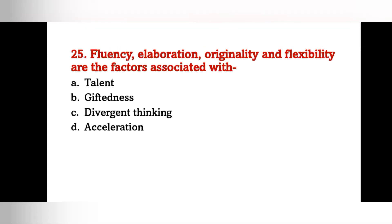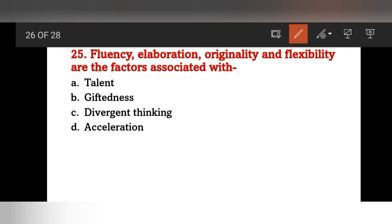Fluency, elaboration, originality, and flexibility are factors associated with: talent, giftedness, divergent thinking, or acceleration? The answer is divergent thinking — these four are factors associated with divergent thinking.